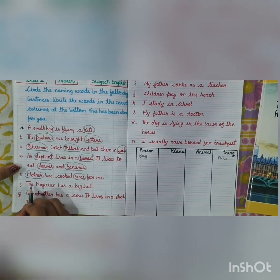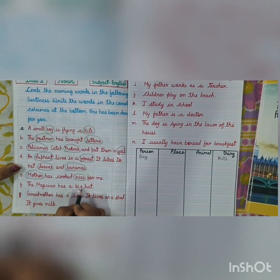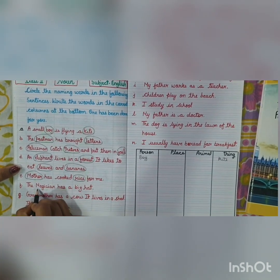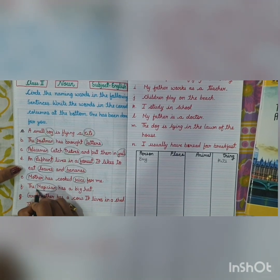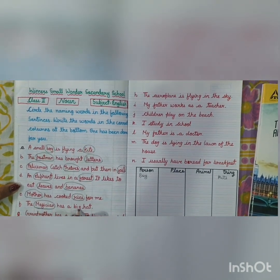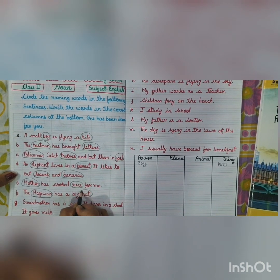Next: The magician has a big hat. Magician is a person, and hat is a thing.